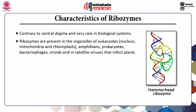Ribozymes are present in the organelles of eukaryotes — for example in the nucleus, mitochondria, and chloroplasts. They are present in amphibians, prokaryotes, bacteriophages, viroids, and in satellite viruses that infect plants.